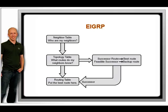In addition to being a rapidly converging protocol, EIGRP is the only routing protocol that supports multiple Layer 3 protocols, namely IP, AppleTalk, and IPX. All the other routing protocols mentioned support only IP.